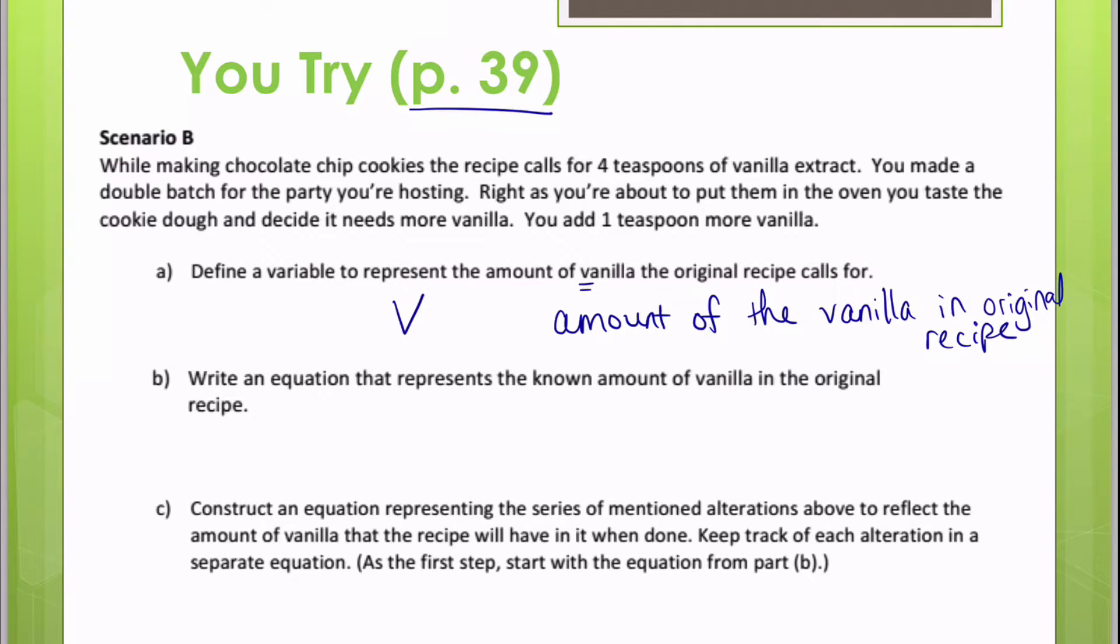Then B asks us to write an equation to represent the known amount of vanilla in the original recipe. So I know that I have four teaspoons of vanilla extract. You made a double batch for the party you're hosting, right as you're about to put them in the oven. You add one teaspoon more of vanilla. Now I'm going to do the same thing. First of all, I know that my equation is V equals four, four teaspoons of vanilla.